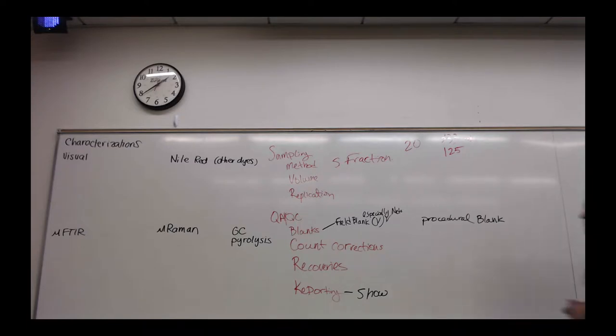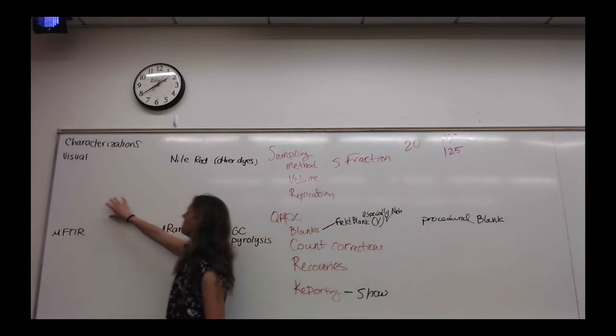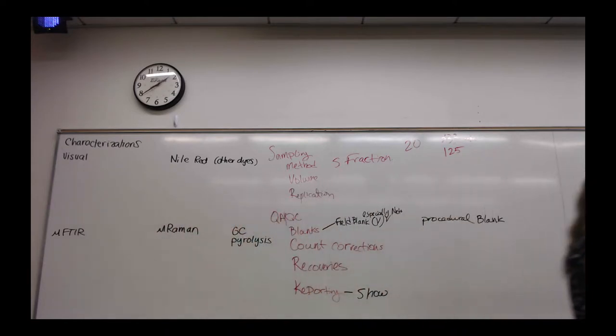And what we found when we went from visual to Nile Red is we found, just like Cara was saying, the ability to detect smaller particles was much greater. Our counts in the smaller fraction size went up substantially when we started looking at Nile Red. Because we had air samples, we had very little, to our knowledge at that point, organic matter on the samples. There ended up actually being some cellulose on there in the end, which I could tell you about. But at that point we didn't seem to have a lot of de-selection from Nile Red, but a lot of help in the smaller size range of particles.